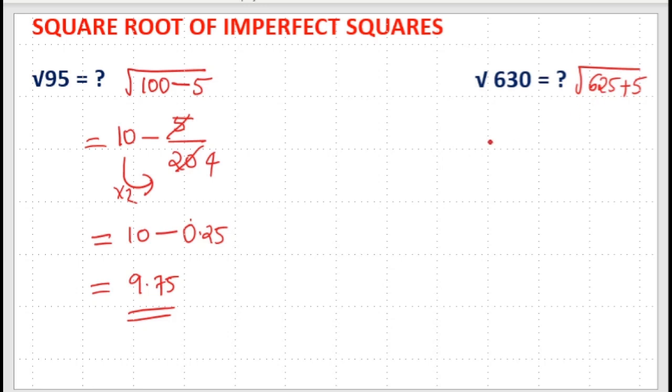So root 6, square root of 625 is 25. 25 plus 5 divided by double of 25 is equal to 50.